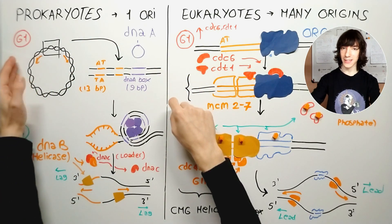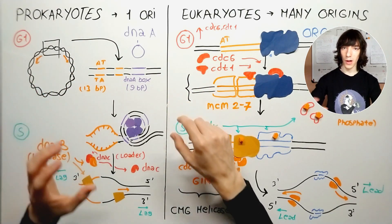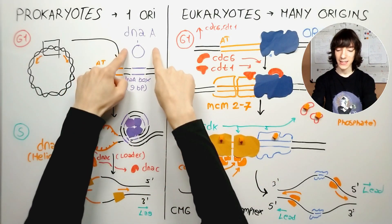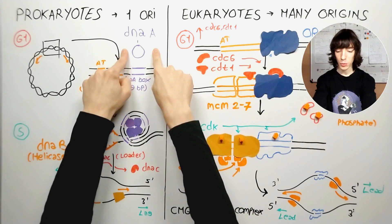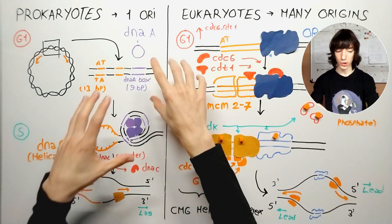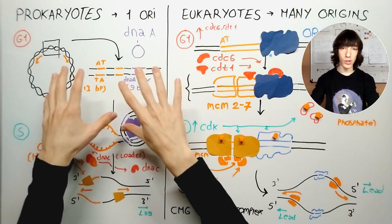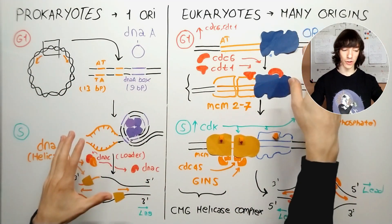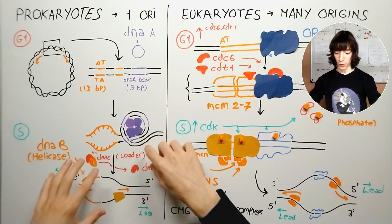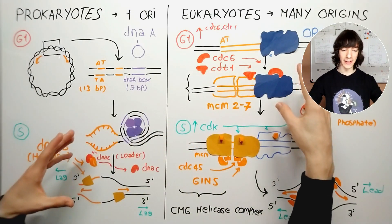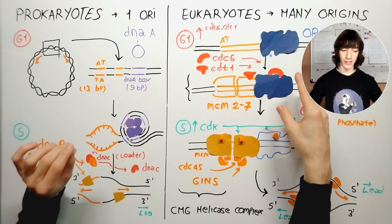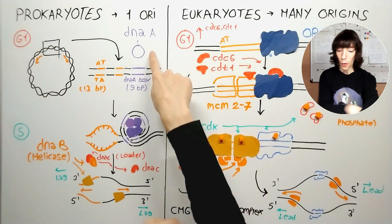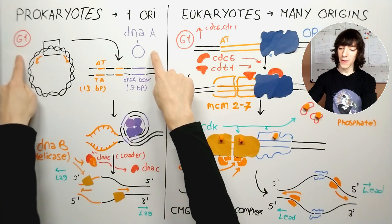During the G1 phase — the first phase of the cell cycle, when cells are still babies and can't reproduce — DnaA proteins are inactive. That's why I've only drawn their silhouette without colouring them, and that's going to be a theme throughout the video. Every time you see a protein or complex of proteins that is entirely coloured, that's an active protein. If it's only the silhouette, it's inactive — like the DnaA proteins during the G1 phase.